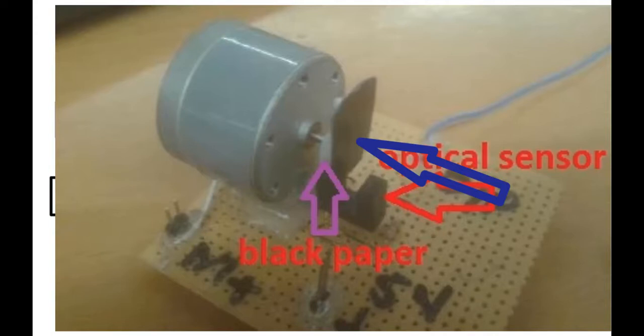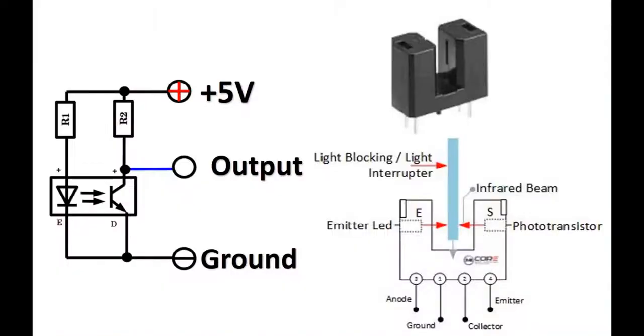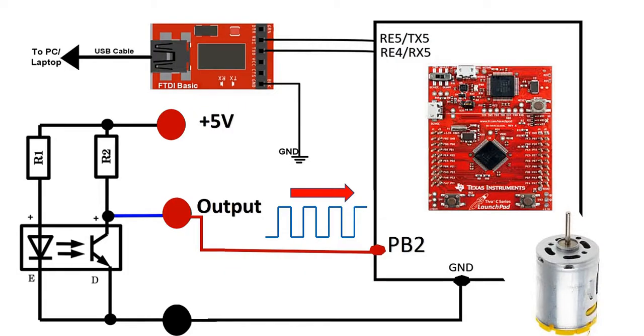Now let's see the demo. Make a connection between TM4C123 Tiva C launchpad and IR obstacle sensor according to this circuit diagram. Connect output pin of sensor to PB2 pin of Tiva board. Also, place the motor in the middle position of the sensor in such a way that black obstacle should appear in between the receiver and transmitter part of sensor once per rotation of the motor.